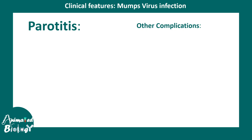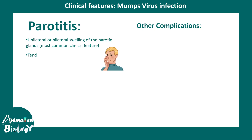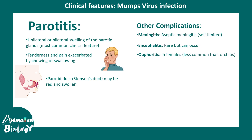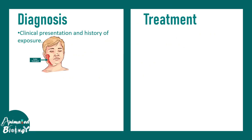Parotitis, meaning parotid gland inflammation, is a very common symptom in mumps infection. The parotitis is often unilateral but sometimes bilateral. There is always tenderness and pain in the area, making it difficult to chew or swallow. Parotid ducts may also be red and swollen. Other complications may involve meningitis, encephalitis, oophoritis (inflammation of the ovaries in females), and pancreatitis.